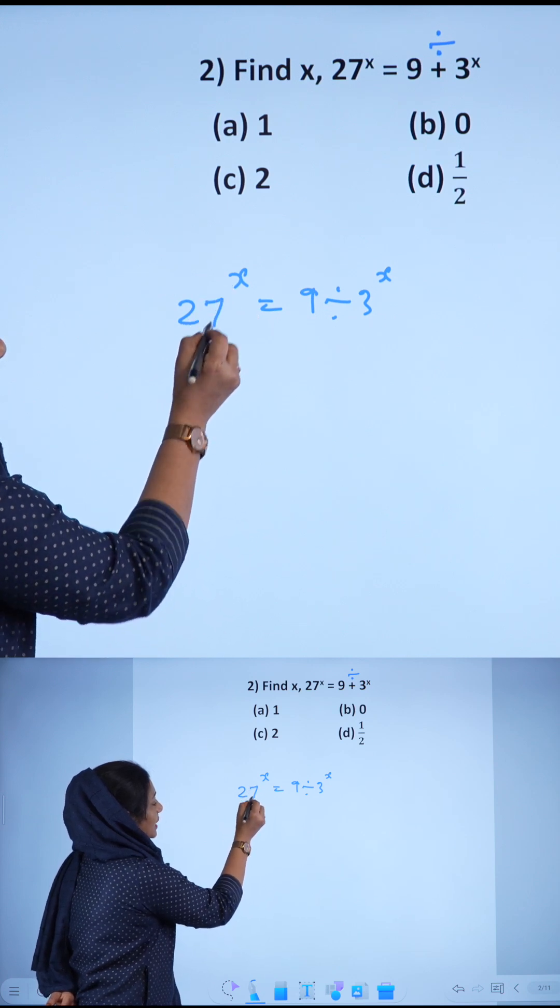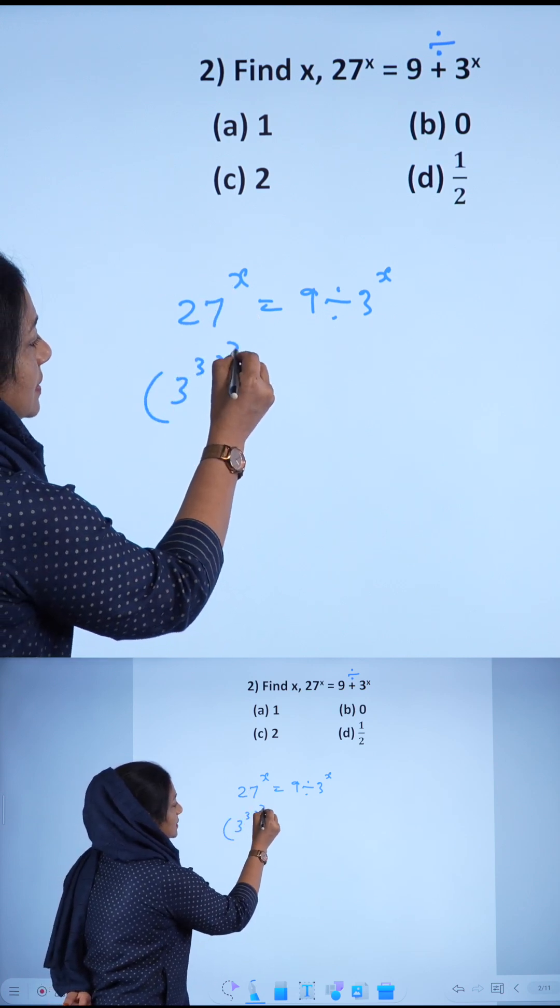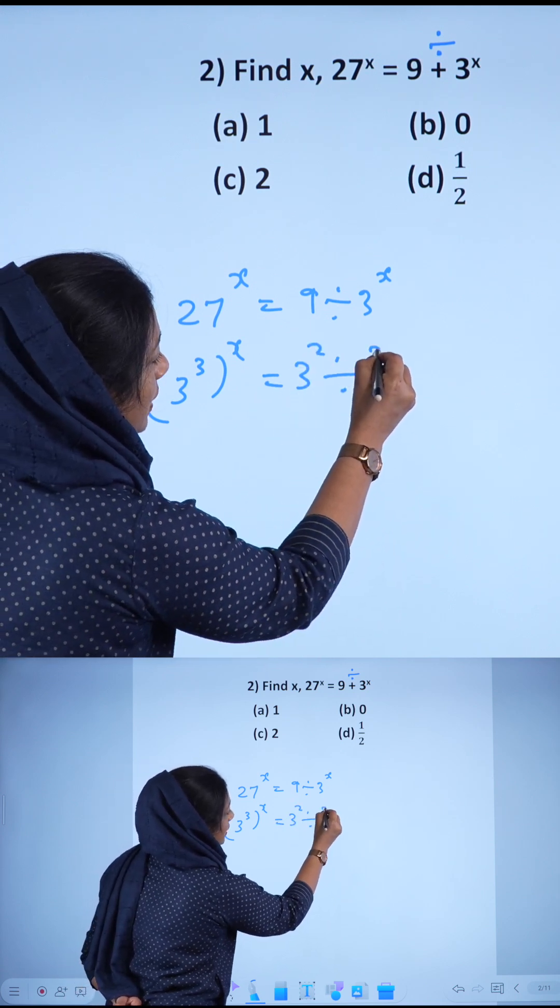So, 27 can be written in the form of 3 raised to 3 raised to x, which equals 3 squared divided by 3 raised to x.